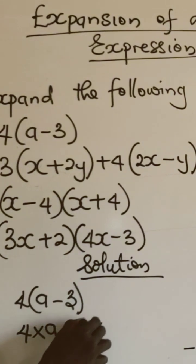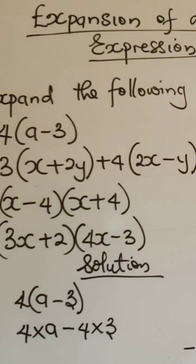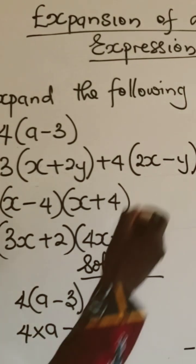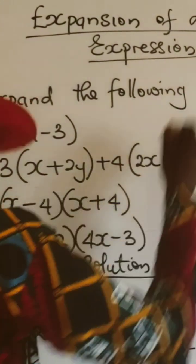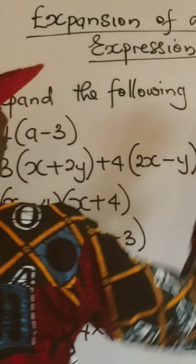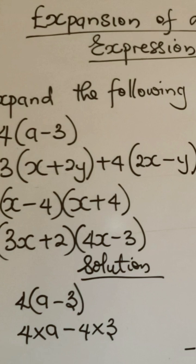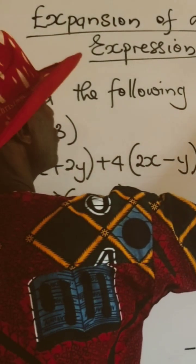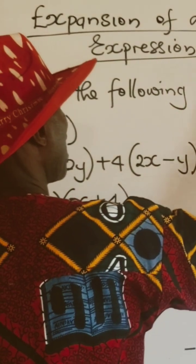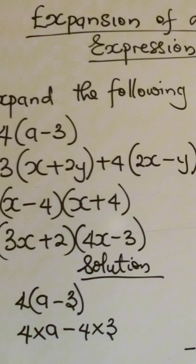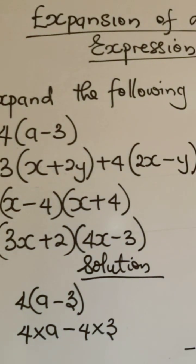Minus the same 4 times 3. So I use 4 to multiply a, I use 4 to multiply 3. What is 4 times a? It's 4a minus. What is 4 times 3? It's 12. So the answer is 4a - 12.